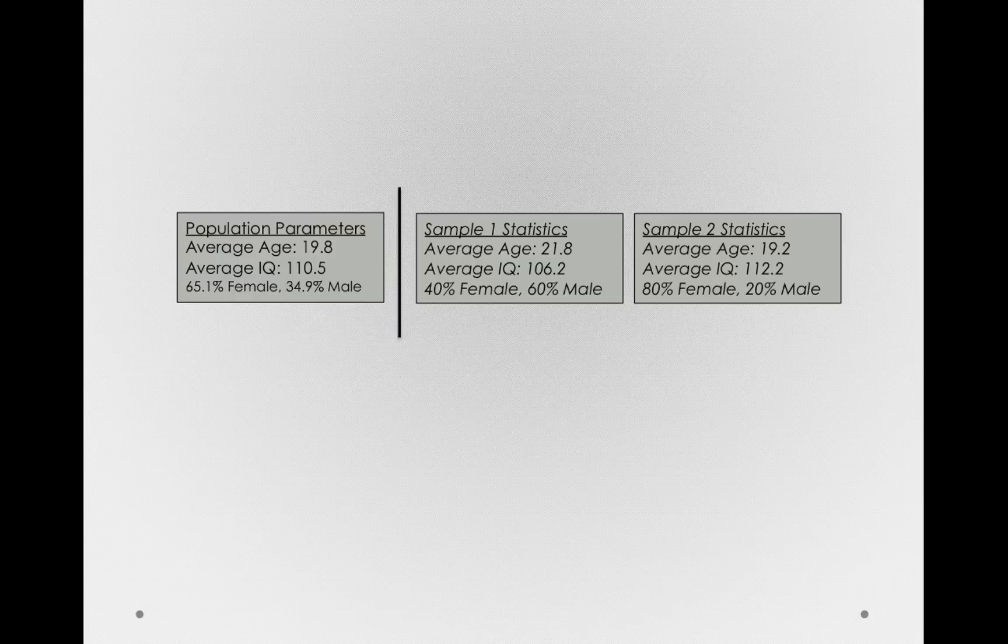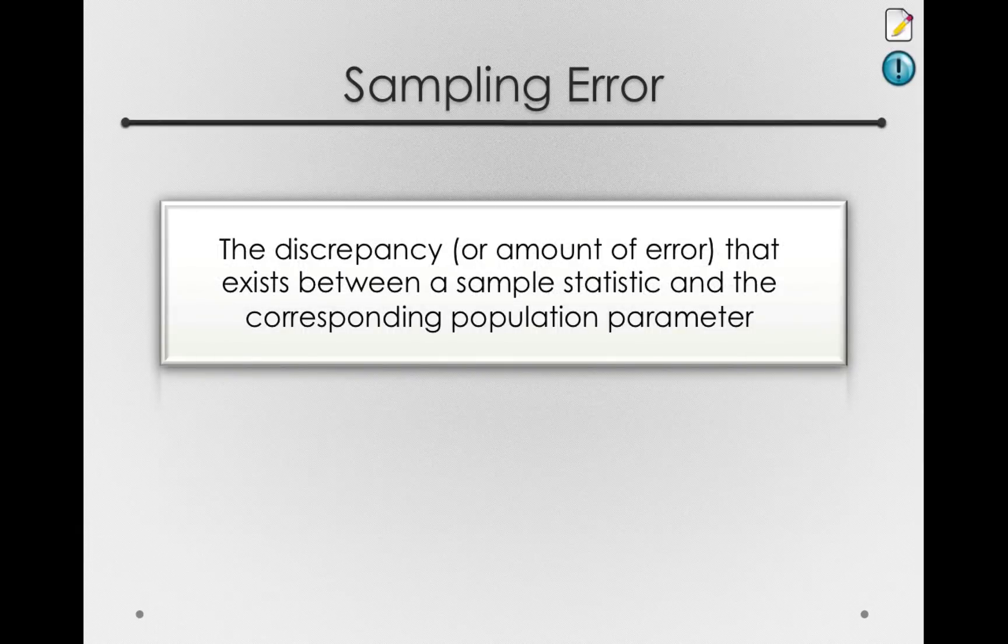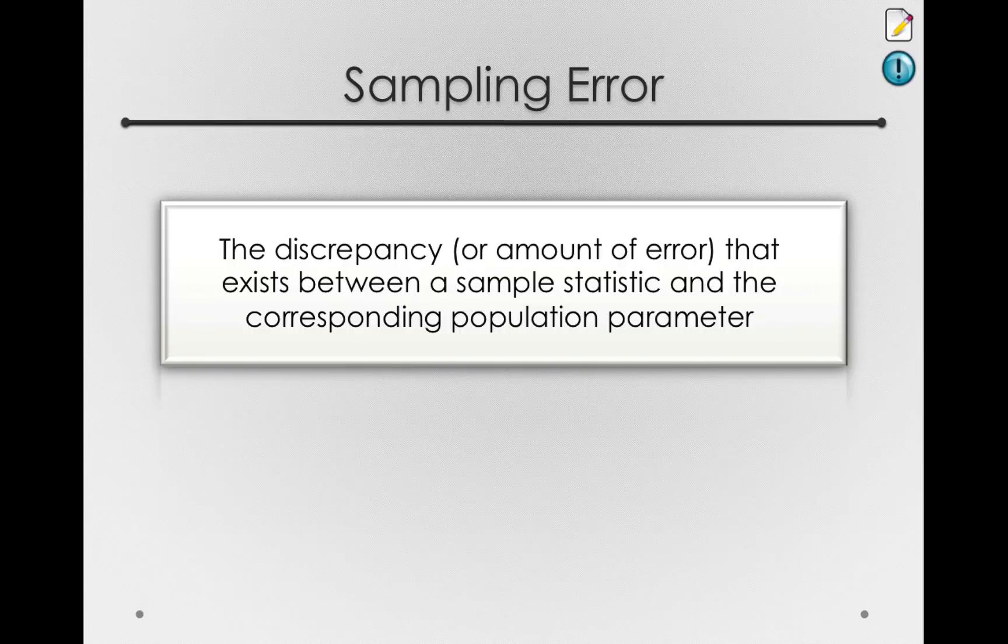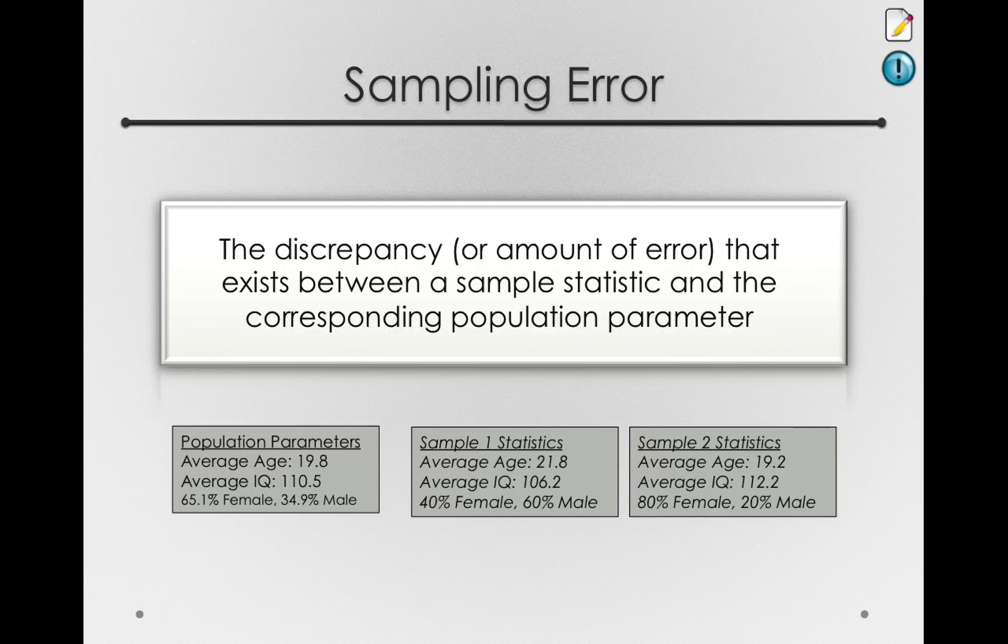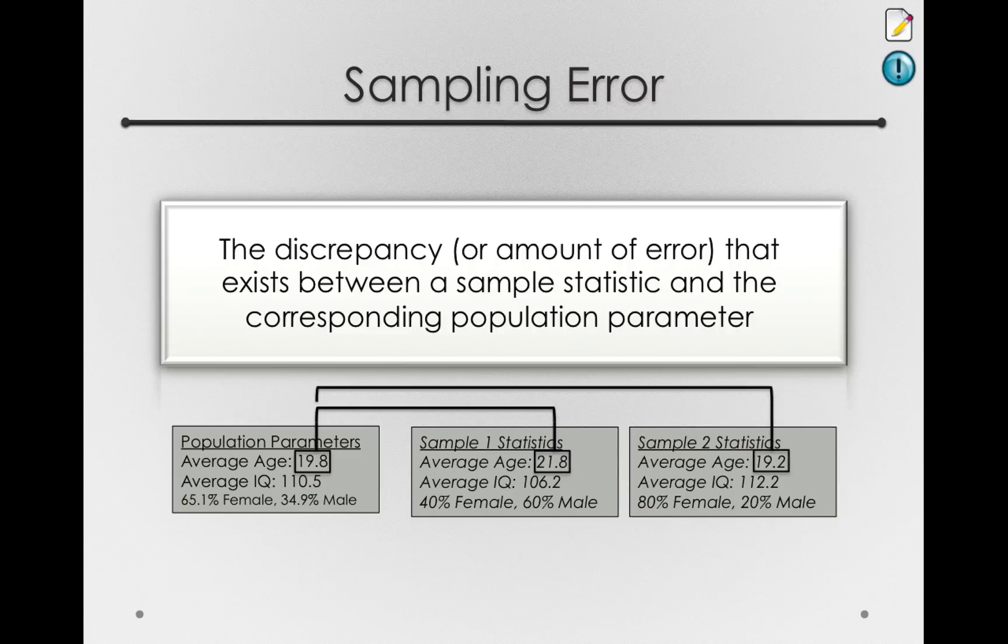Now this has a name in statistics, and this is probably one of the most important concepts in all of statistical inference. That discrepancy is called sampling error. And sampling error is just the discrepancy or amount of error that exists between a sample statistic and the corresponding population parameter. So again, the difference or the discrepancy between the average age in the population and the average ages in each of our samples, that's sampling error.